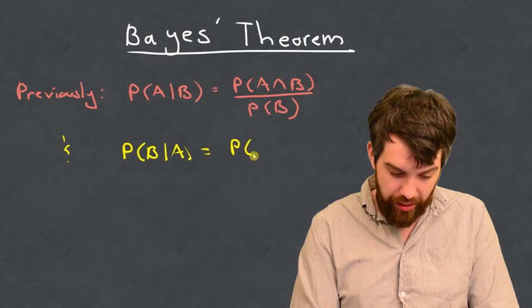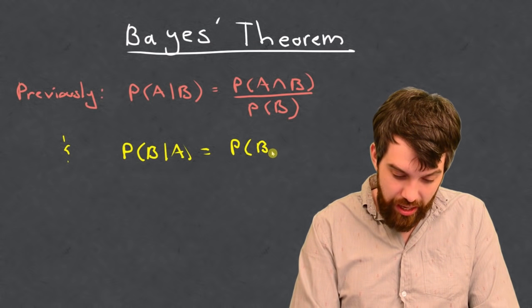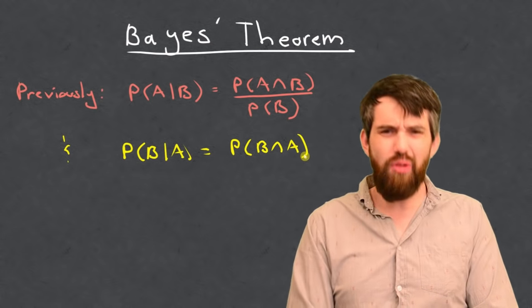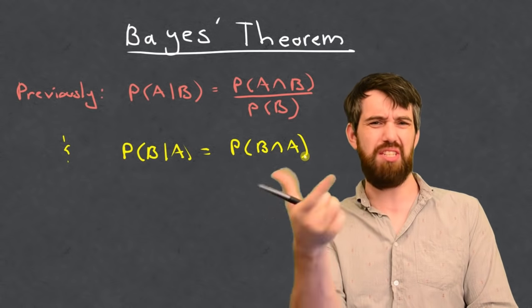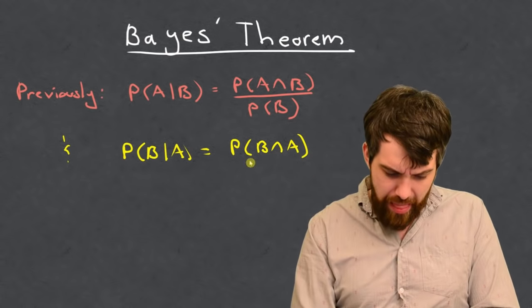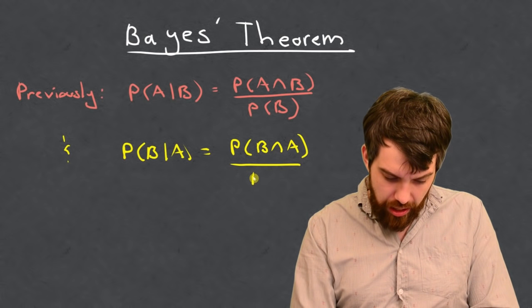And by comparing these two, it just has to be the probability. Now, it's B intersect A. Note that that doesn't matter. A intersect B and B intersect A, I can flip those around. It doesn't make any difference.